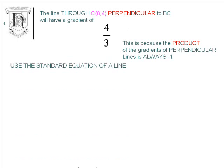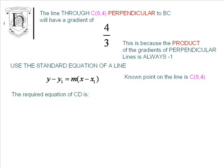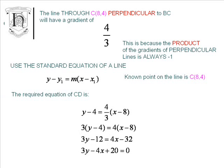Again, we're going to use the standard equation of the line, Y minus Y₁ equals M(X minus X₁). We're going to be using this quite a lot. We know point C (8, 4) is on the line, so substituting all this information, the required equation is Y minus 4 is equal to 4 thirds (X minus 8).